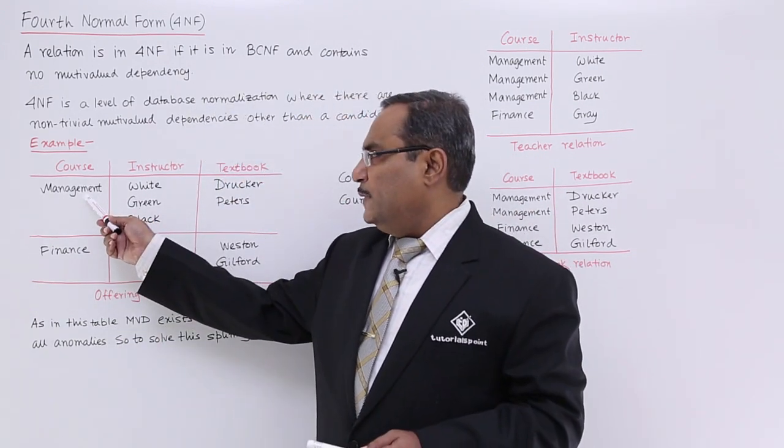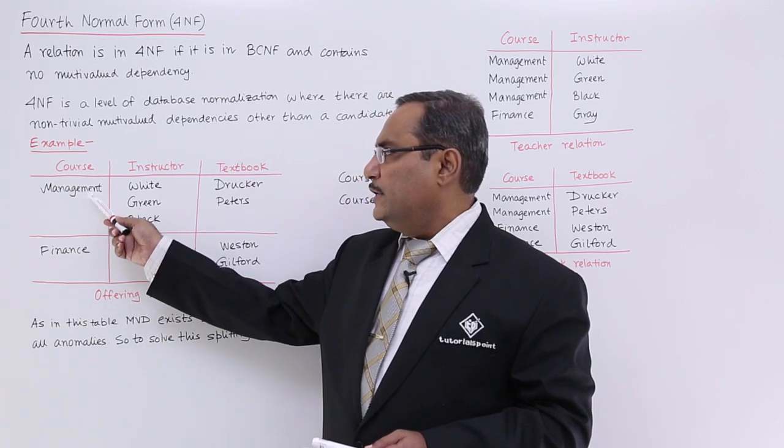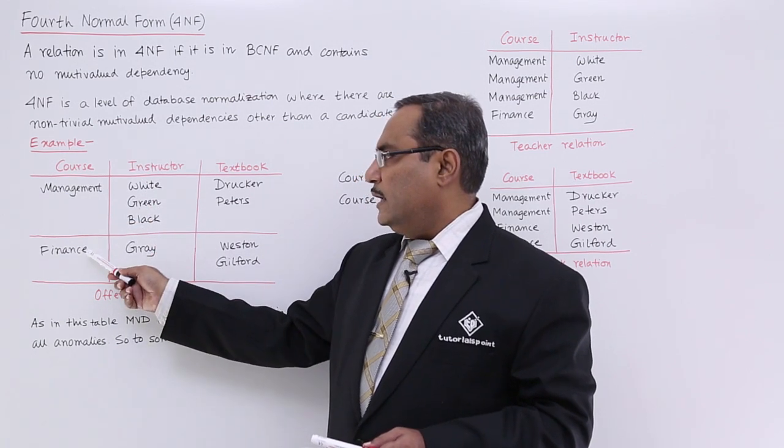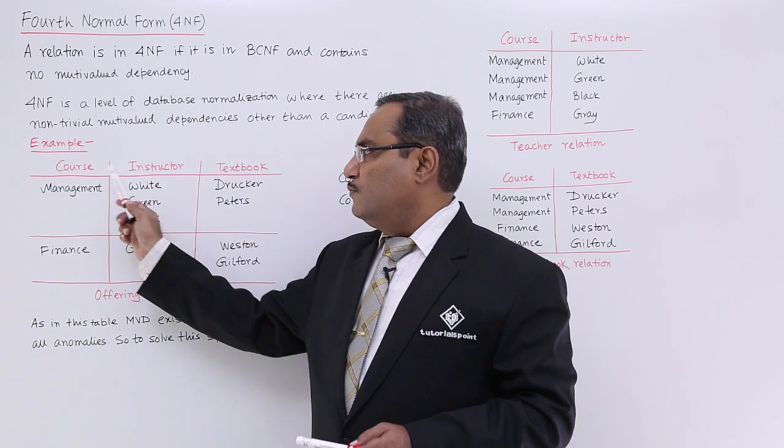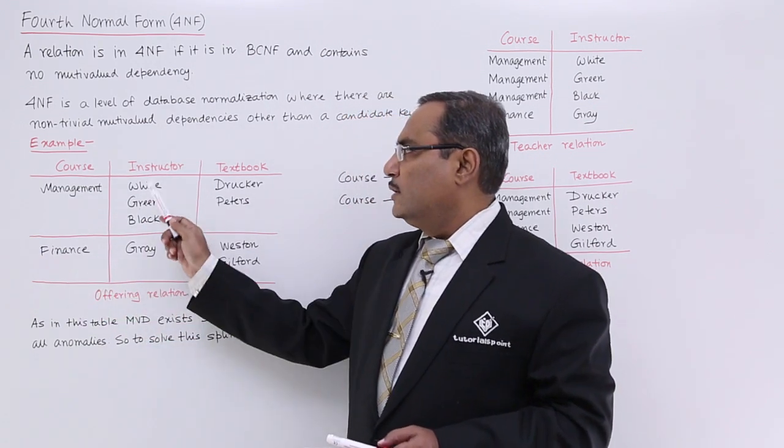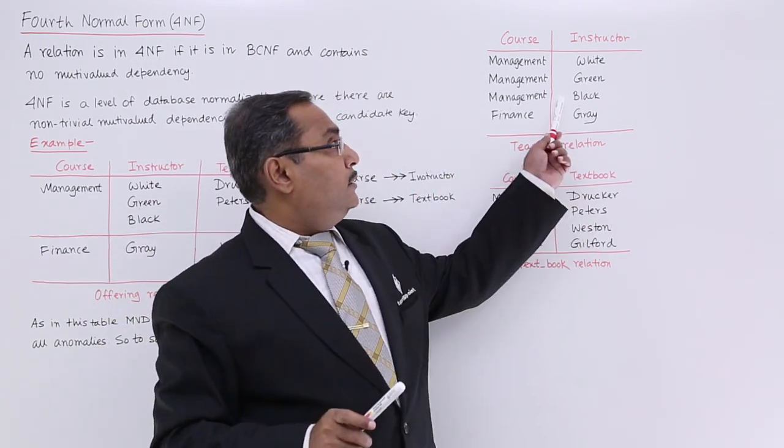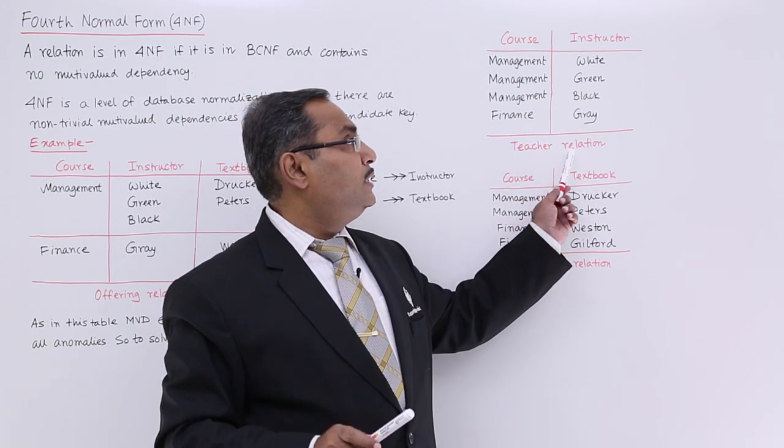Here you see, this management will be written three times in total for instructor and this finance will be written once. So four tuples will be there in the course instructor relation, that is the teacher relation.